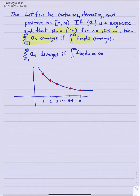To repeat that: the infinite series from n equals 1 to infinity of f of n will converge if the improper integral from 1 to infinity of f of x dx also converges. The infinite series will diverge if the improper integral diverges.